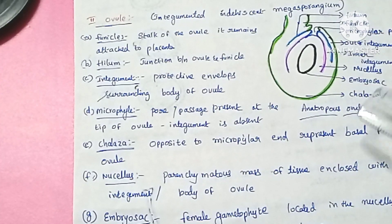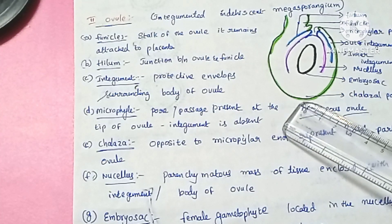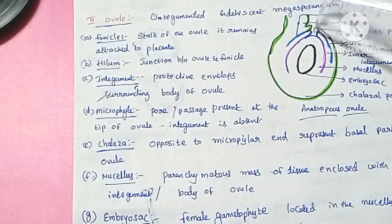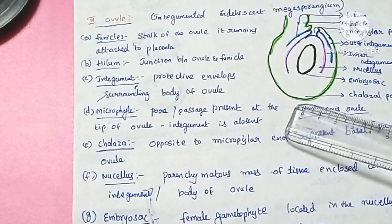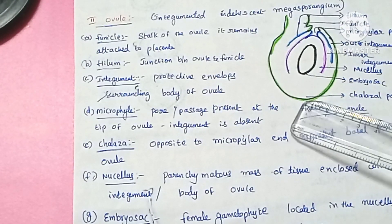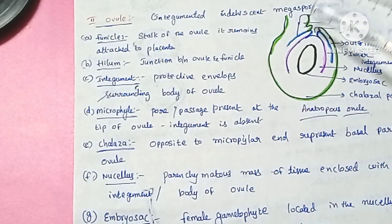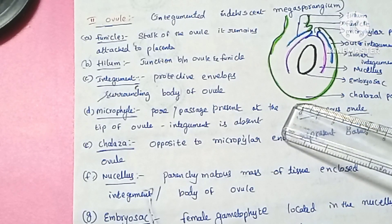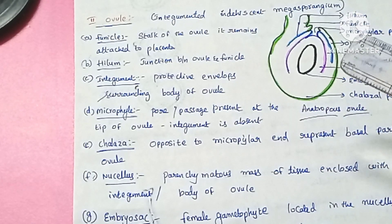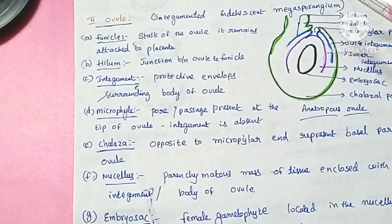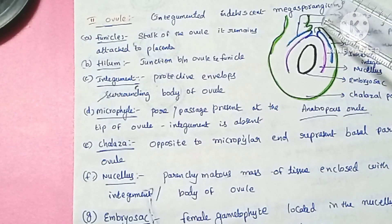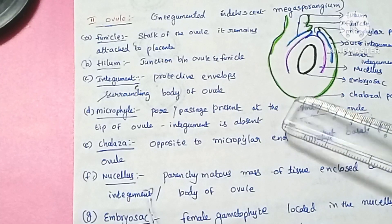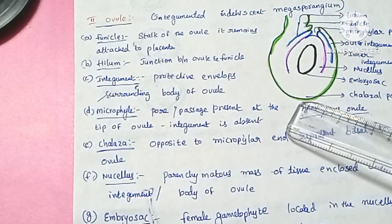Next is the chalazal pole, also called the chalazal end. It is the base of the ovule present opposite to the micropyle end. So the micropyle pole is opposite to the chalazal pole, forming the base of the ovule.